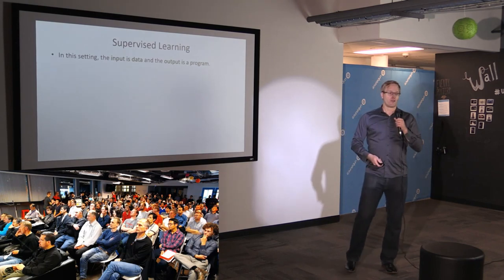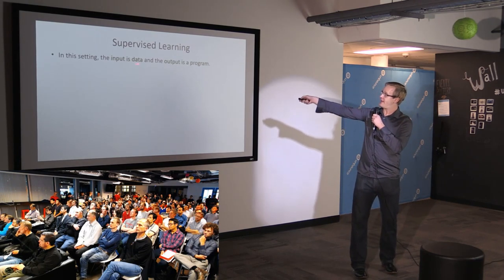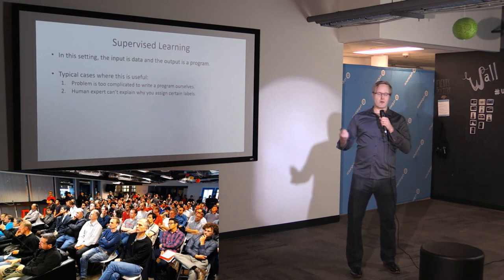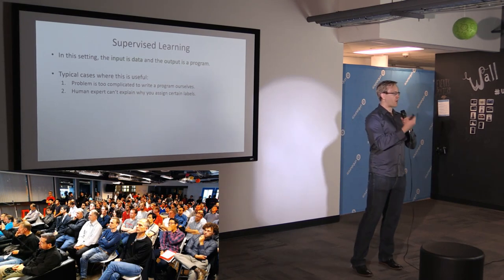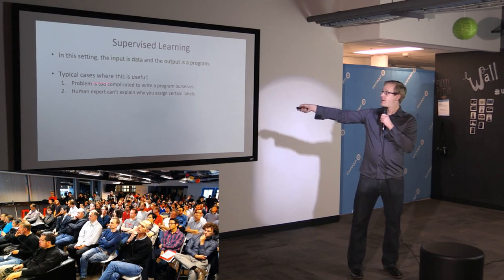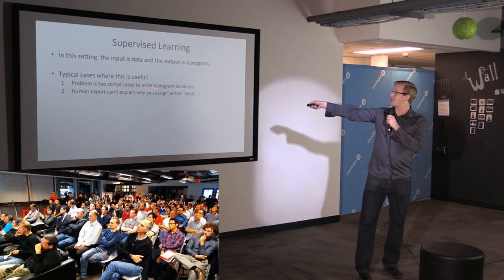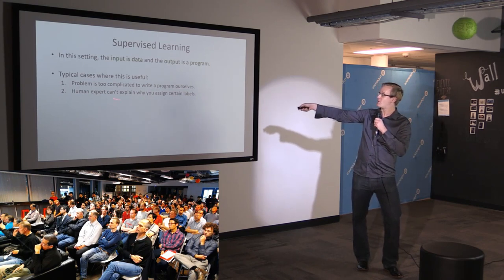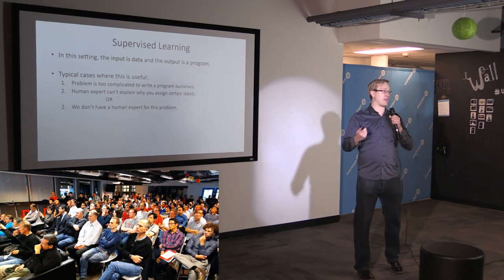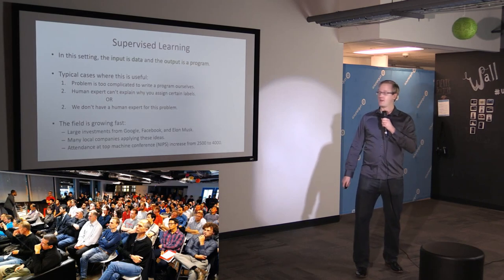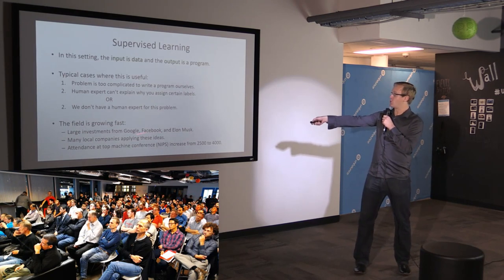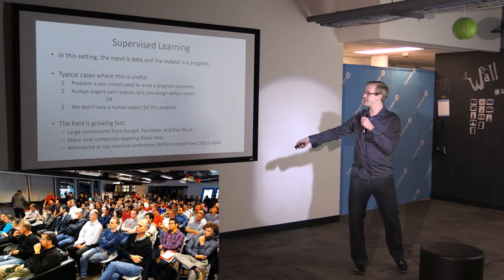One way to think about this: the input is data and the output is a program. This is different from the usual way we write programs. Here we have examples of input and output and we use the data to write the program for us. Typical cases where this is useful: the problem is too complicated to write the program ourselves, a human expert can't explain why certain input maps to output, or you just have labels and want to use them. This is a very fast-growing field — evidenced by over 200 people in this room.